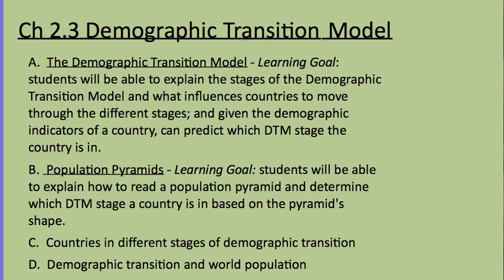Regarding population pyramids in this key issue, the learning goal is that students would be able to explain how to read a population pyramid and determine which demographic transition model stage a country is in based on the pyramid's shape. The last two sections cover countries in different stages of demographic transition — specific examples of countries in stages 2, 3, and 4 — and the history that determined how they moved through these stages. The last section, D, Demographic Transition and World Population, is an overall look at patterns and specific time periods or incidents in history that pushed these countries through the different stages.